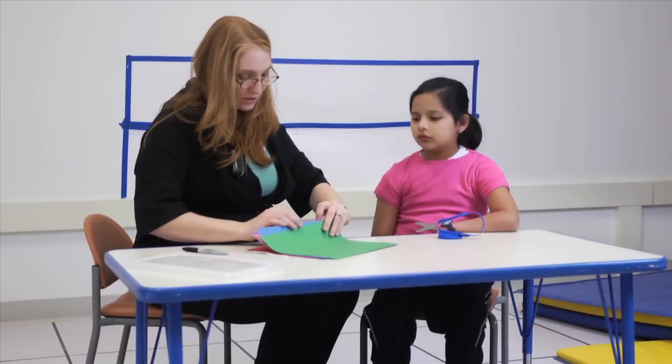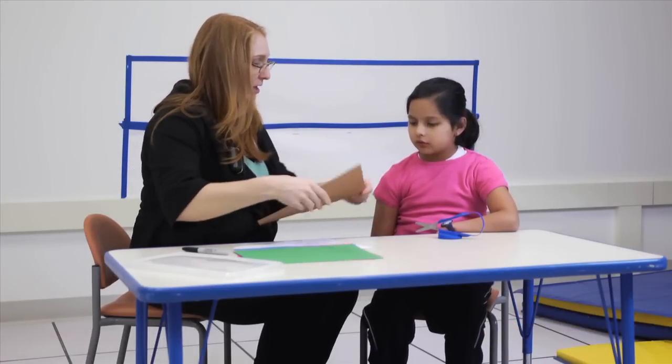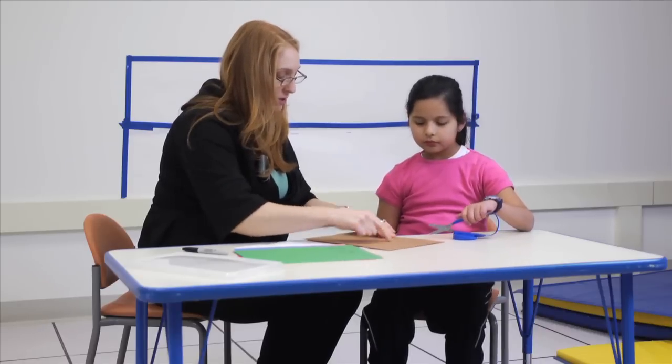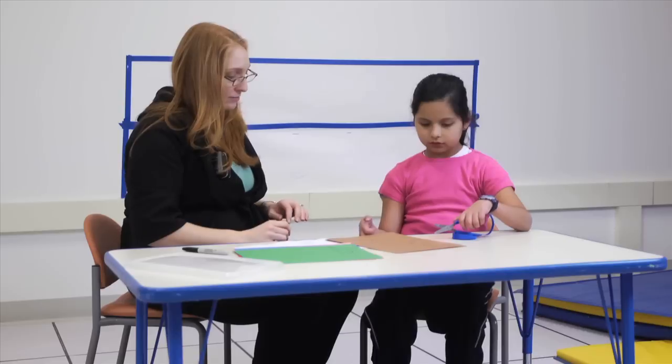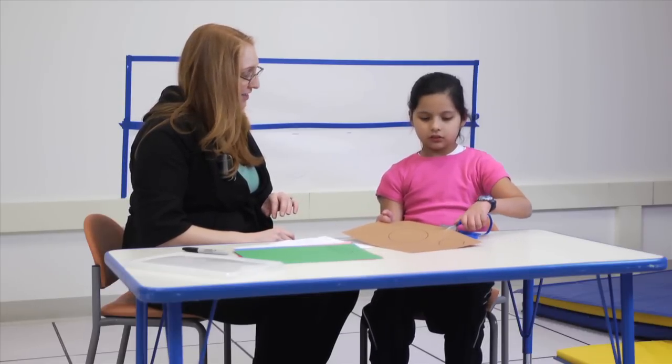This child has a diagnosis of Charcot-Marie-Tooth. Charcot-Marie-Tooth disease is a group of disorders passed down through families that affect the nerves outside the brain and spine. These are called peripheral nerves.